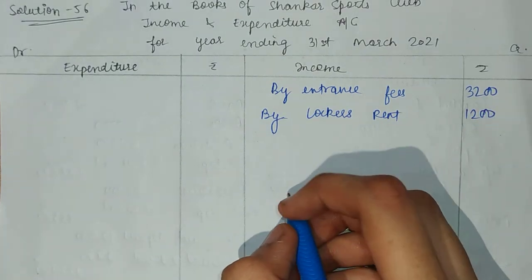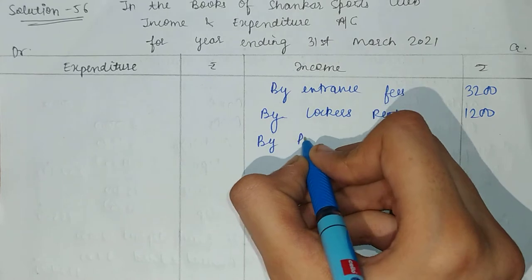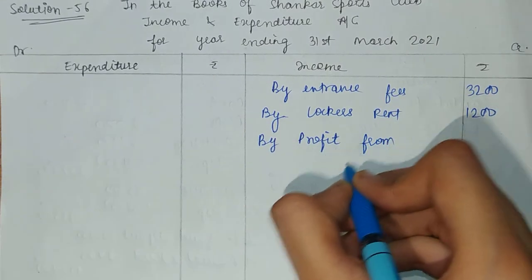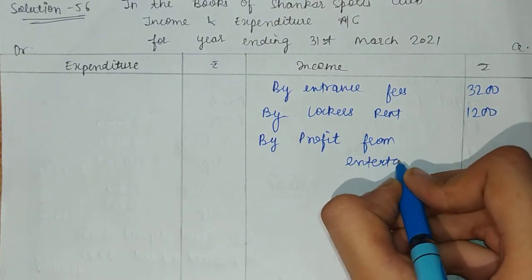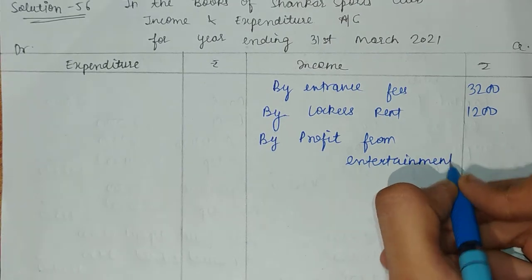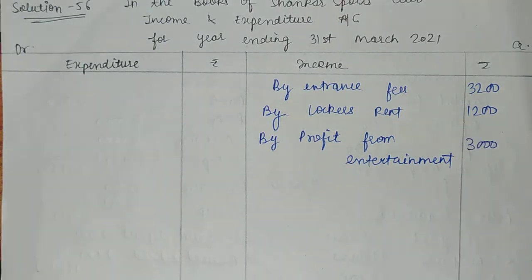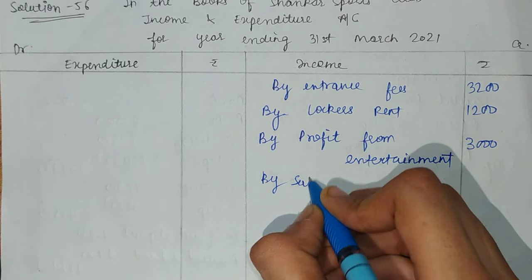Life membership fees will not come into the income and expenditure account. Then we have profit from entertainment — by profit from entertainment we credit this amount. Now we have to talk about the subscription amount. By subscription, we need to include the subscription amount in the income and expenditure account.